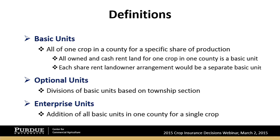The disadvantage of enterprise units is you're less likely to get a payment — there's a lower percentage of time you'll receive a payment. However, premiums per acre are substantially lower with enterprise units. This is a farm-by-farm decision. If you have farms with quite different risk profiles, lean toward basic units. If farms have similar risk in terms of flooding and weather variability, take a strong look at enterprise units because it's much cheaper on a per-acre basis.